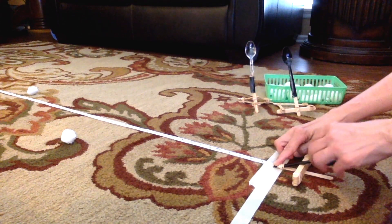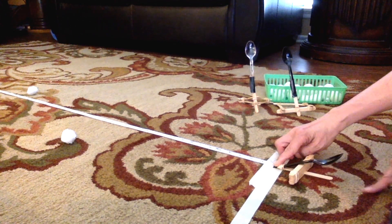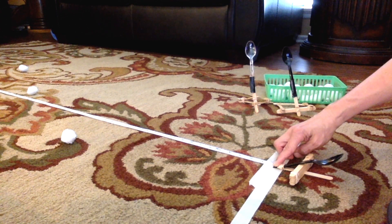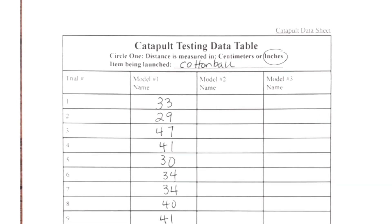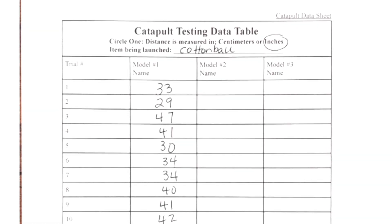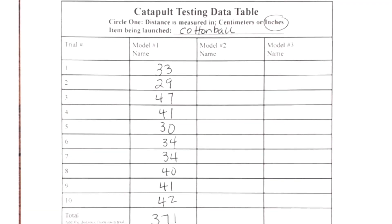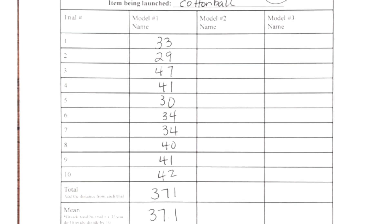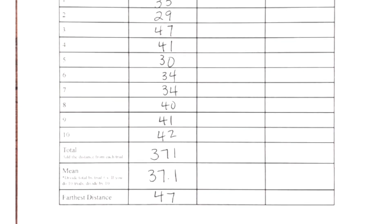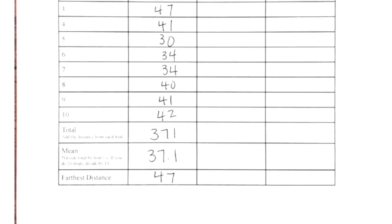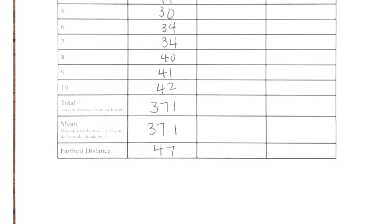Then I will get another cotton ball. Wow, that went pretty far — that went 47 inches. I will mark that on my data sheet. I will continue launching my catapult until I have my 10 trials and collect data for that catapult. I will mark whether I'm measuring in inches or centimeters, tell what I'm launching, and record my data. Down here I'm going to find the mean — if I do 10 trials, I will divide that total by 10. And I also want to document my farthest launch, which in this case was 47 inches.